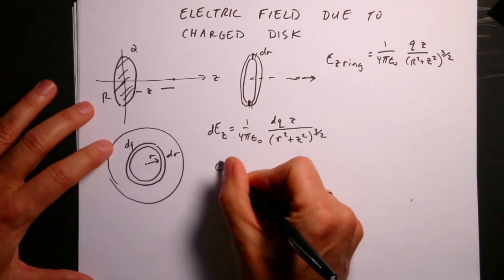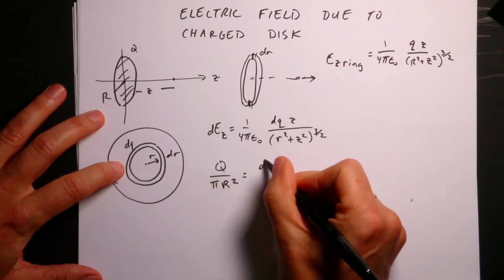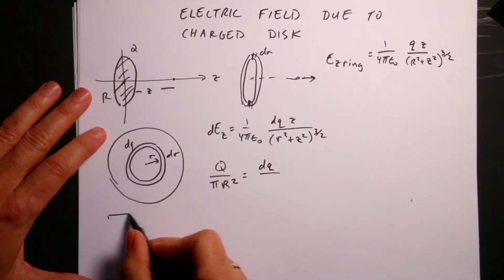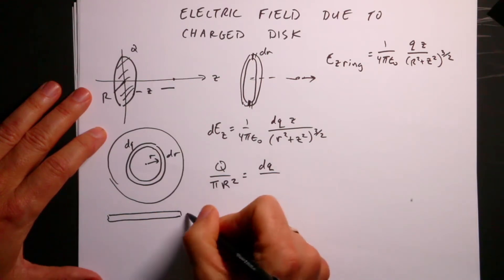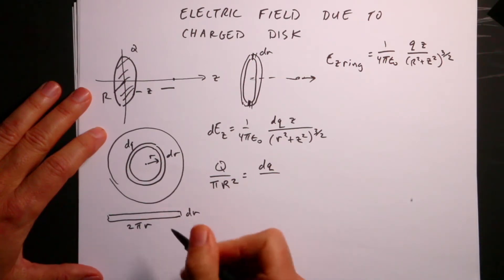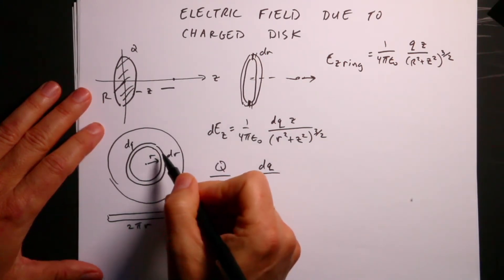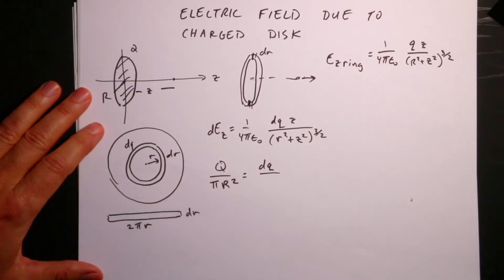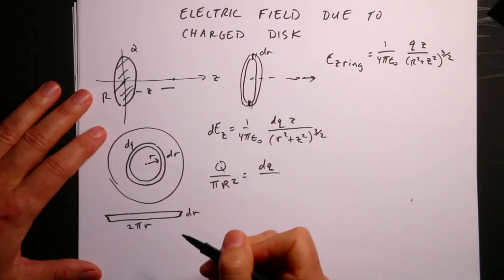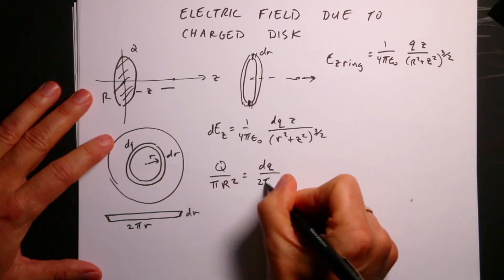The total disk has total charge Q and area π R squared. This ring has total charge DQ. Its area: if I take the ring and cut it and spread it out, it would be a rectangle. The width of that rectangle is dr, and the length is the circumference 2πr. So the area is 2πr dr. If I let dr go to zero, which is what I'm doing in my integration, that's fine — it's a good approximation.